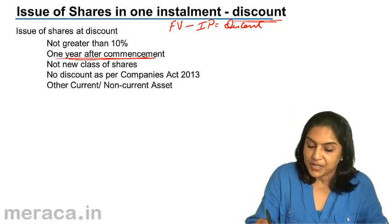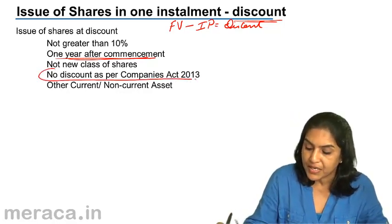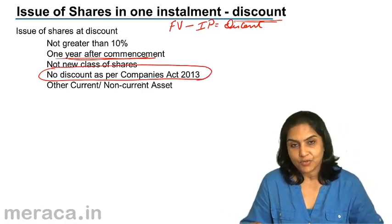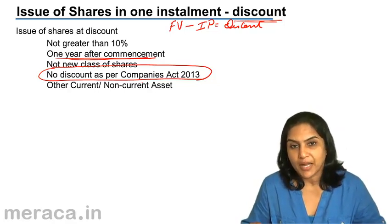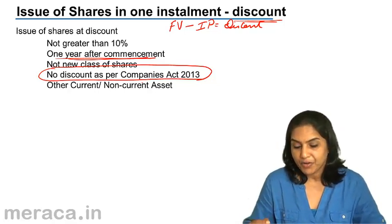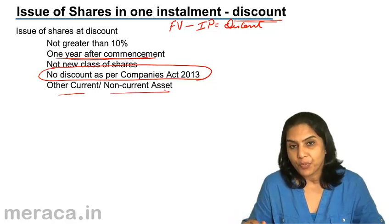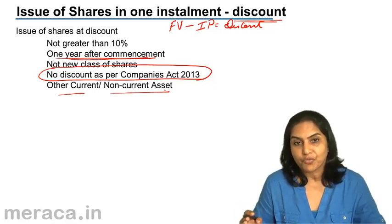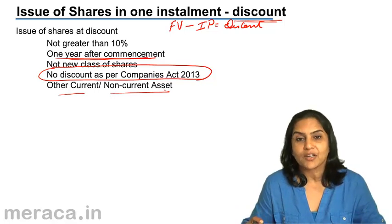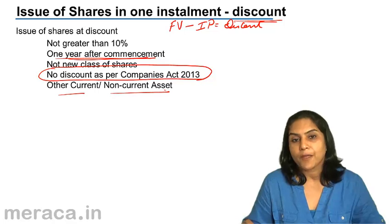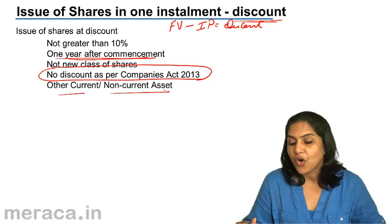However, as per the new Companies Act 2013, shares cannot be issued at a discount. If there is a discount in the balance sheet and it is being carried forward, then it is shown under other current or non-current assets, depending on whether the discount is intended to be written off within one year. If within one year, it is shown under other current assets; if over a period greater than one year, that portion is shown under non-current assets.